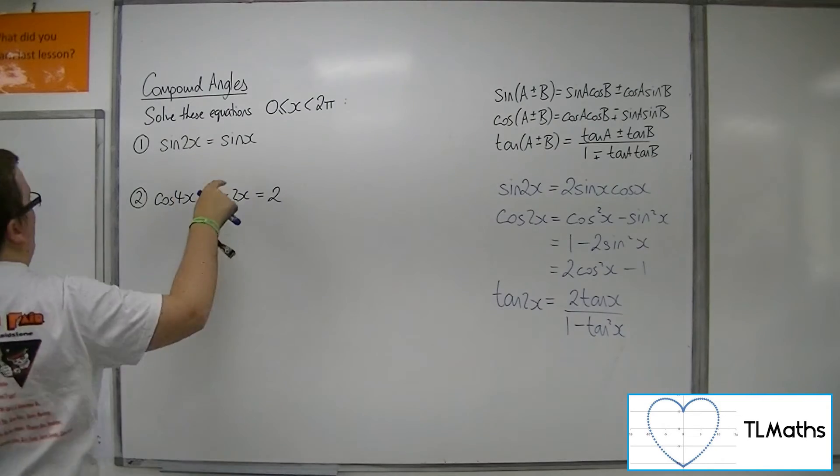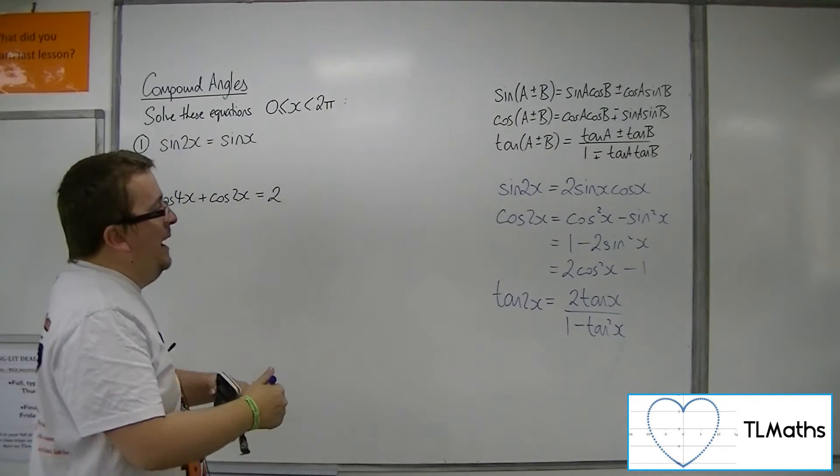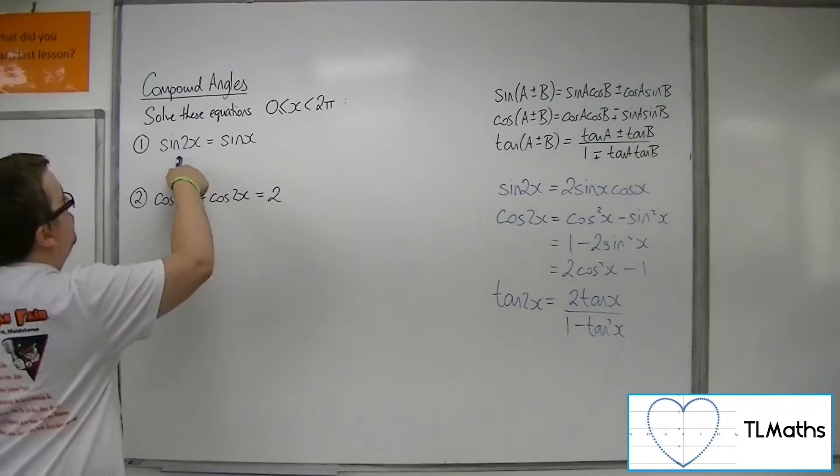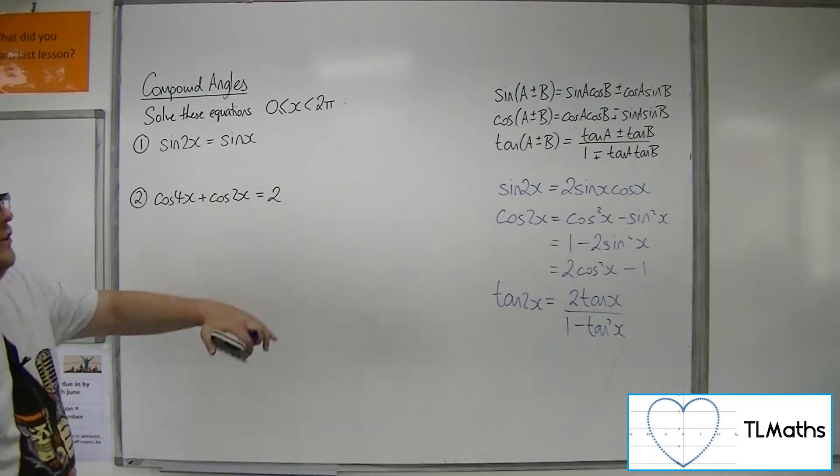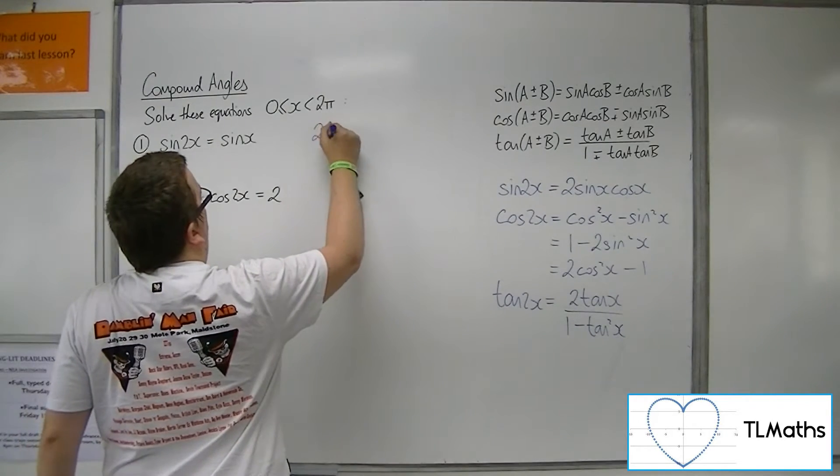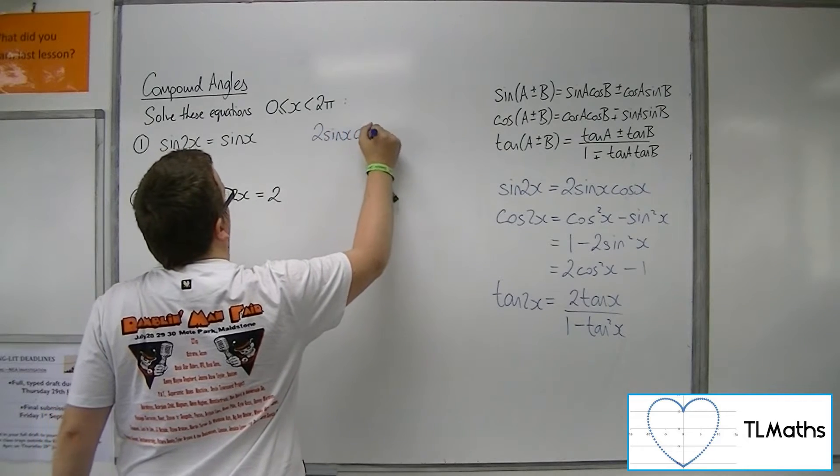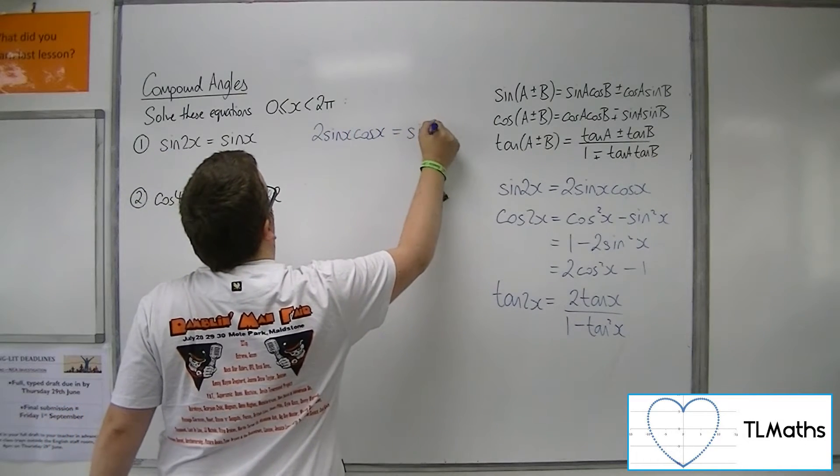Now sin 2x equals sin x. Now sin 2x, there's nothing you can replace that with apart from 2 sin x cos x. So that's what we're going to do. So 2 sin x cos x must be equal to sin x.